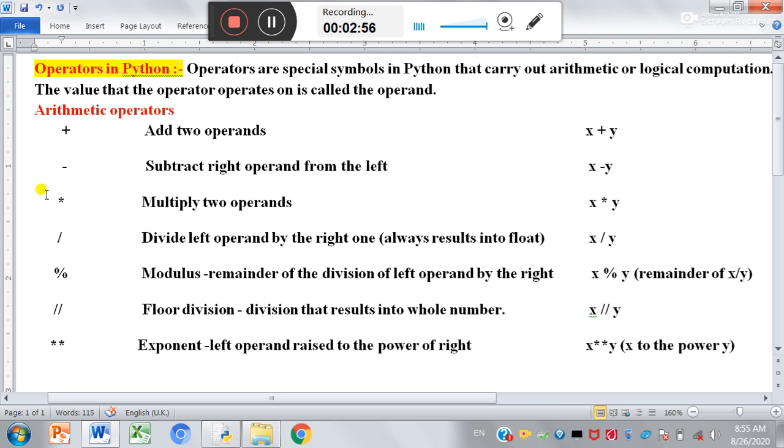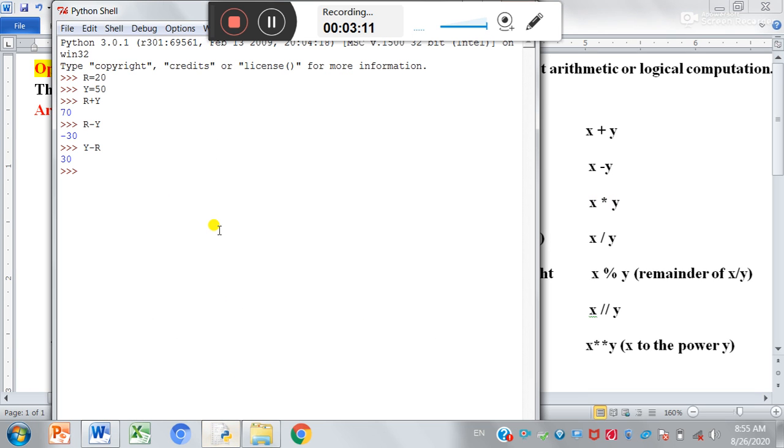Now third operator is asterisk. Multiply two operands. So asterisk is used for multiplication. How we can use it: x into y. Now let us do it practically. So r into y. So here we have r equal to 20, y equal to 50. And if we multiply both these values, the output will be 1000.